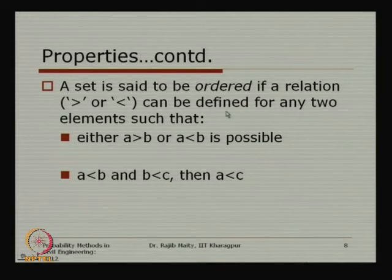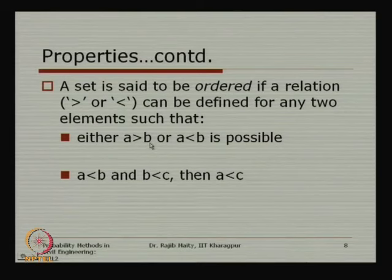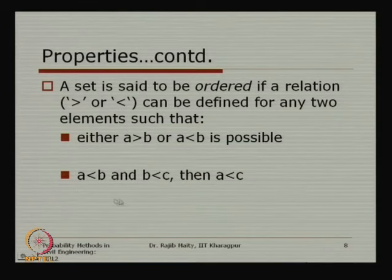Another important concept is the ordered set. A set is said to be ordered if a relation like 'greater than' or 'less than' can be defined for any two elements. For example, if I take two elements a and b, and a is greater than b or a is less than b is possible, then this kind of set is an ordered set. We can even conclude that if a is less than b and b is less than c, then a is less than c.